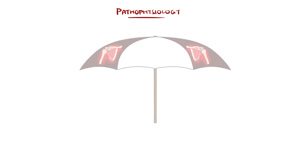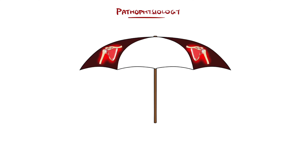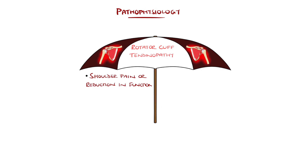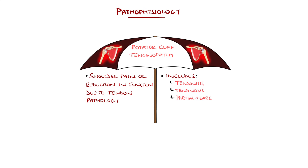Injury to the rotator cuff can be diverse, with rotator cuff tendinopathy being an umbrella term that refers to shoulder pain and weakness, encompassing a spectrum of tendon pathology, including conditions such as tendinitis, tendinosis, partial tears, and subacromial impingement.